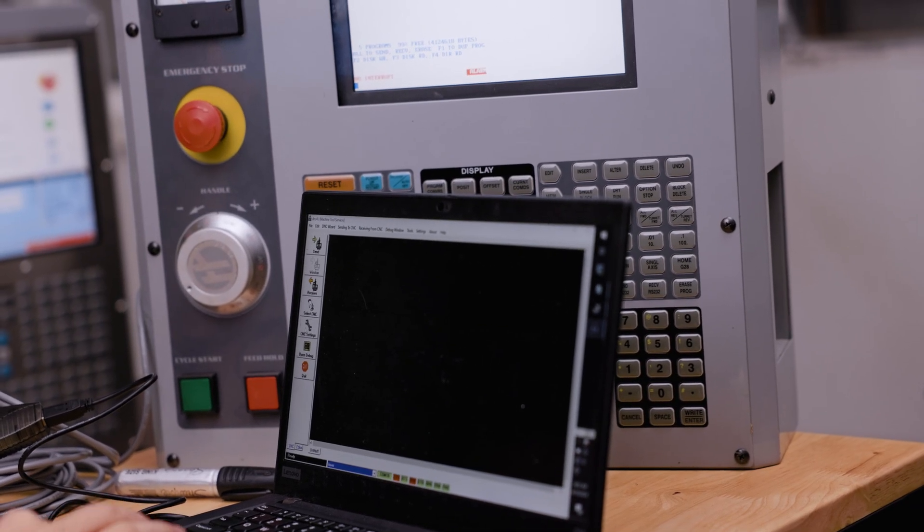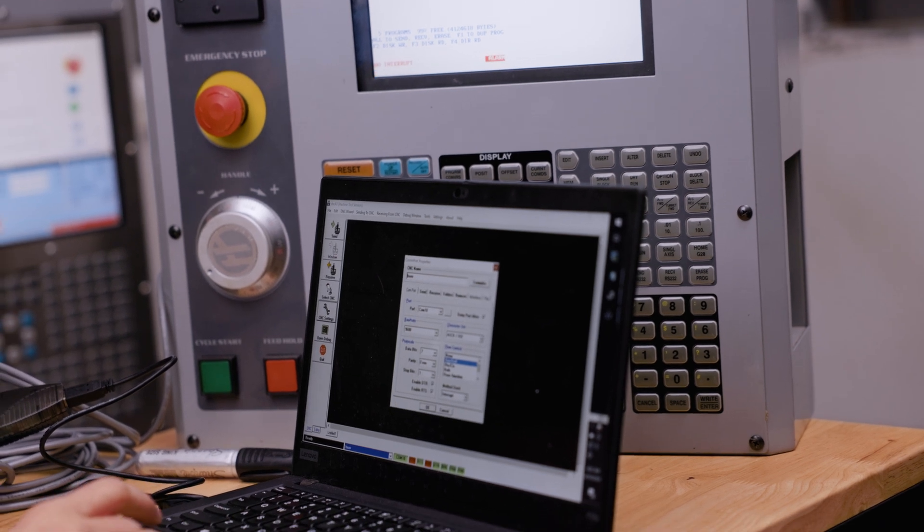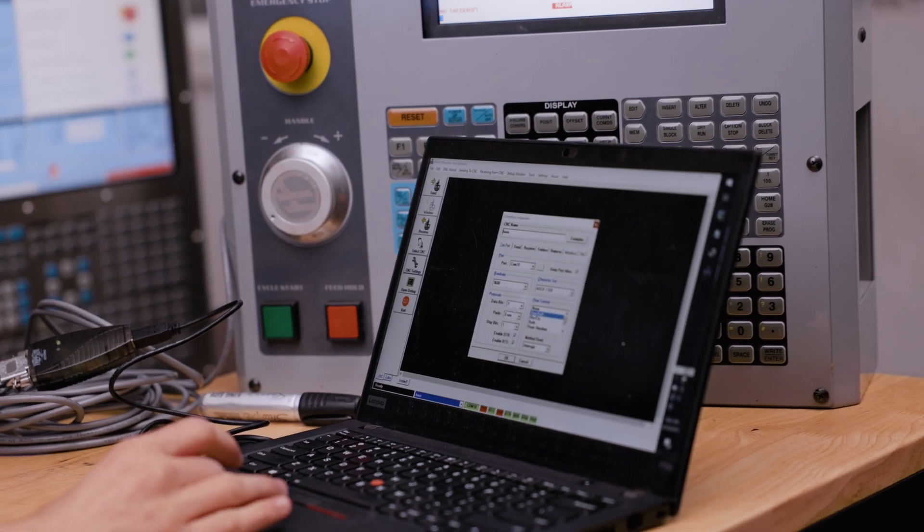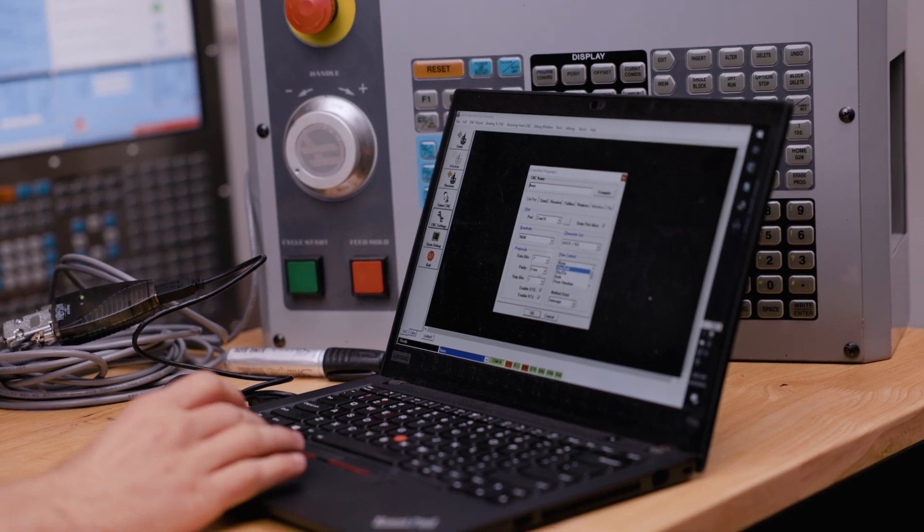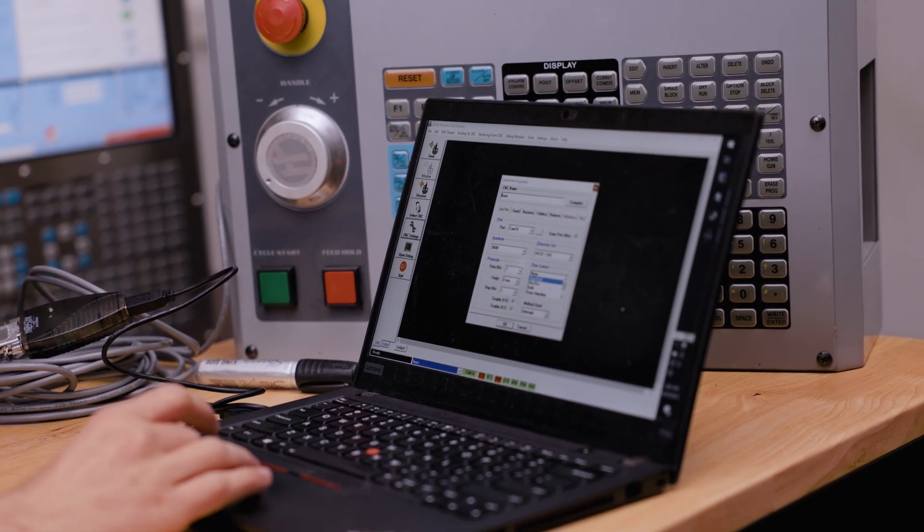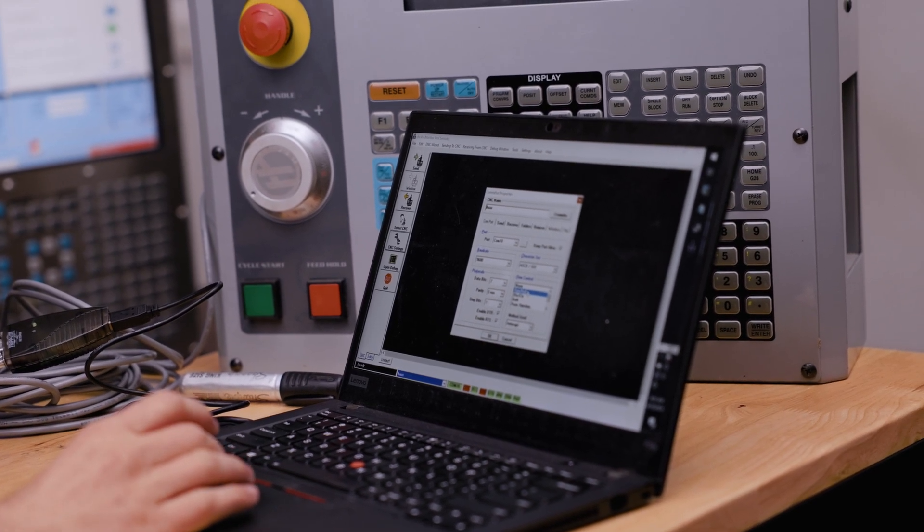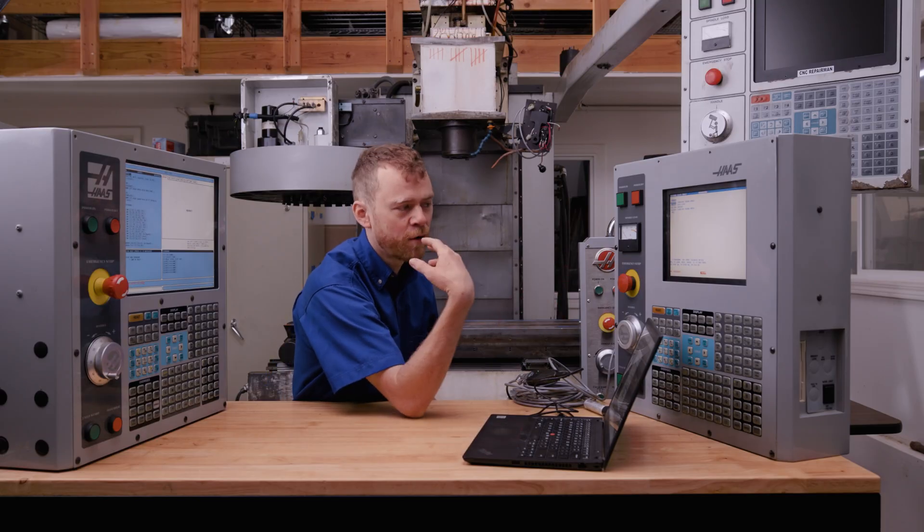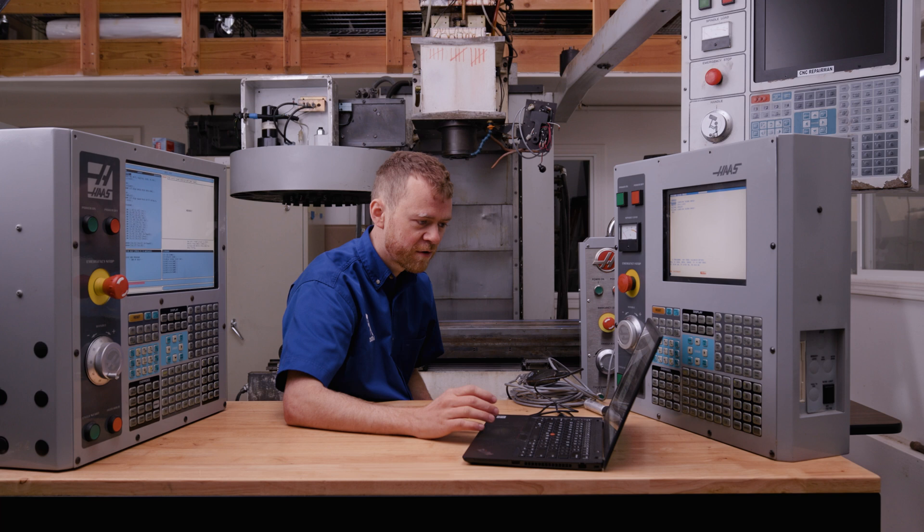We're gonna come in here and we're gonna go to configure the CNC, and we're gonna set the baud rate to be 9600, the way it was here. The data bits to seven, parity even, stop bits one, the flow control X on, X off. If this is set up right, you're gonna be able to receive a program from here to your computer.